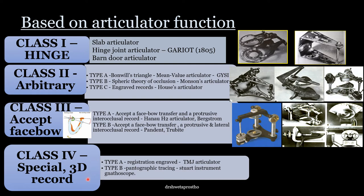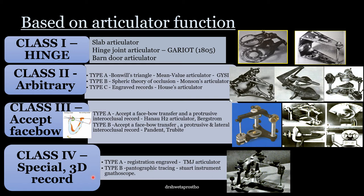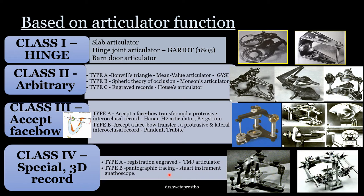Class 4 articulators are the most advanced. They accept three-dimensional registrations by the patient and accurately reproduce the condylar pathways for each individual patient. Type A: the condylar pathways are formed by registrations engraved by the patient — example is the TMJ articulator. Type B articulators allow angulation and customization of the condylar path and use pantographic tracings — examples are the Stuart articulator and the Gnathoscope.